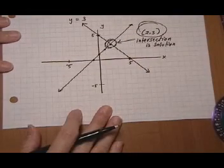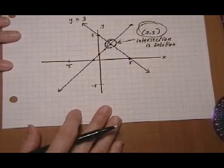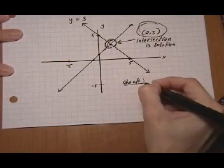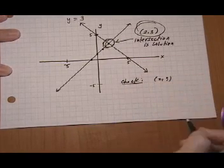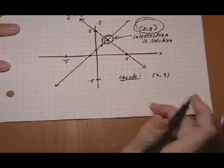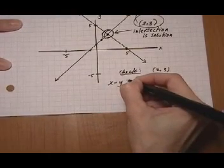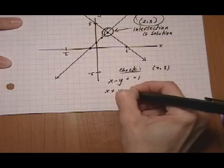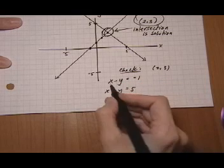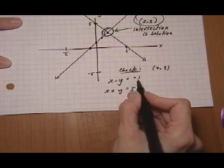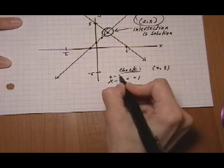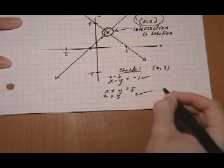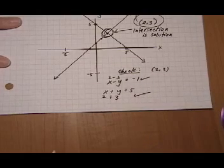So that is solving the system by graphing. And you can always double check by making sure the point two, three satisfies both equations in the system. X minus Y equals minus one, and X plus Y equals five. So first the X minus Y equals minus one. If I have two minus three, yes, that equals minus one. If I have two plus three, yes, that equals five. And then you know for sure you did it right.